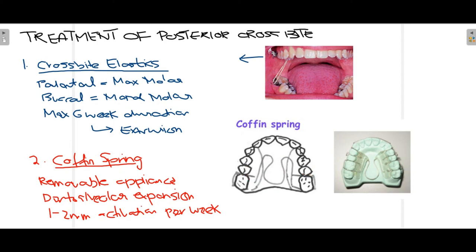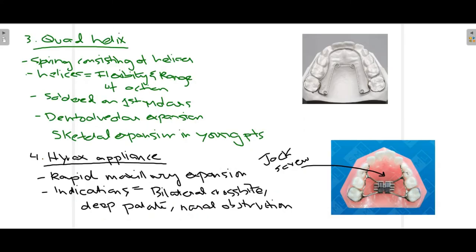The third appliance is the quad helix. It is a spring-like appliance with four helices — the helices provide range of action and flexibility so that expansion can occur. The quad helix is banded over the molars for retention, and forces are exerted in the buccal direction to achieve expansion and correct the crossbite.